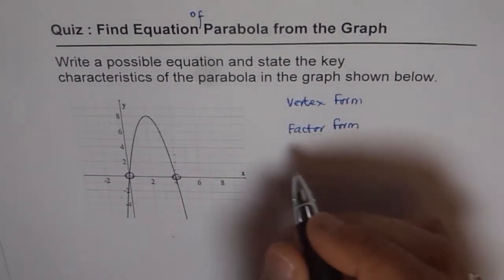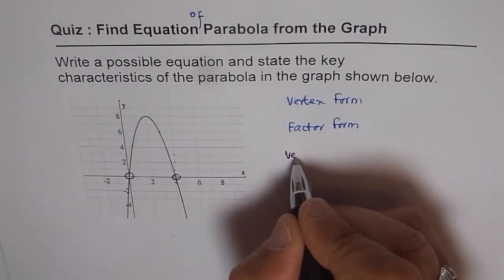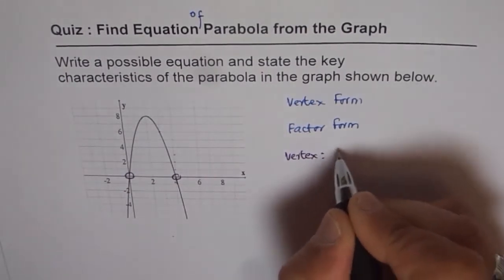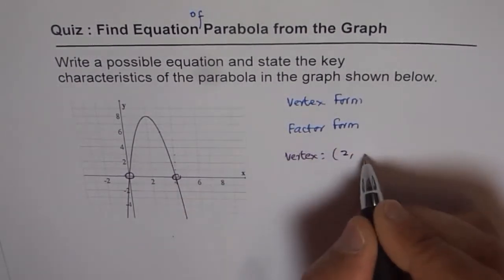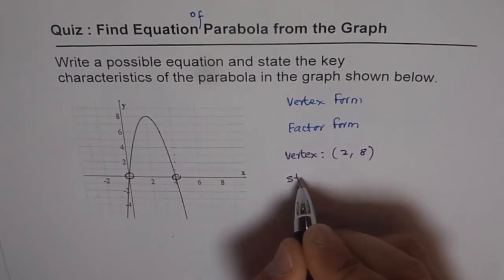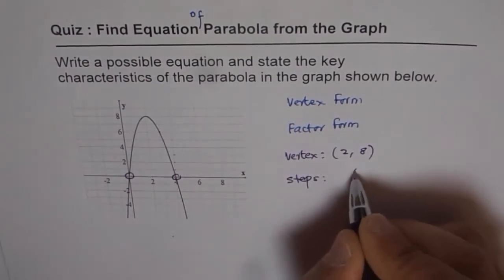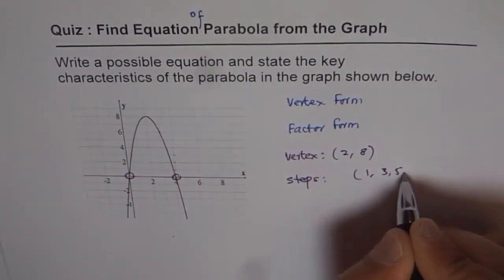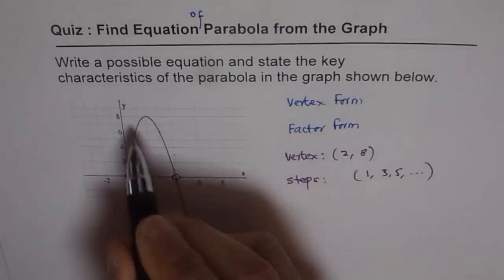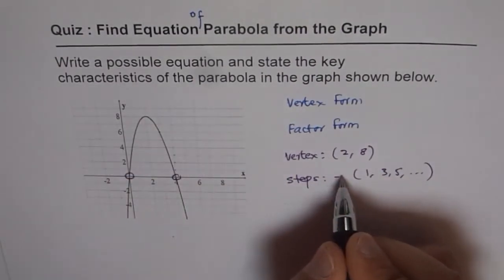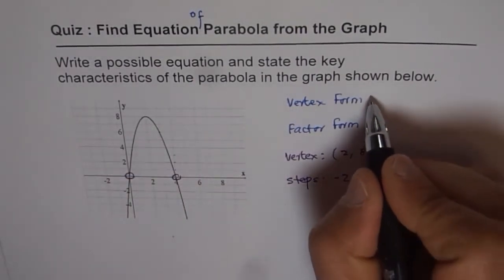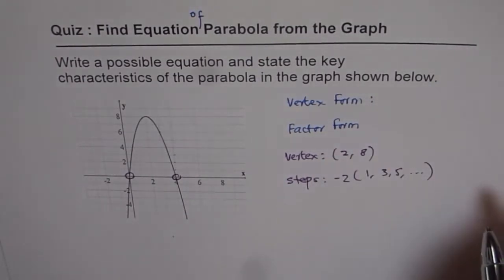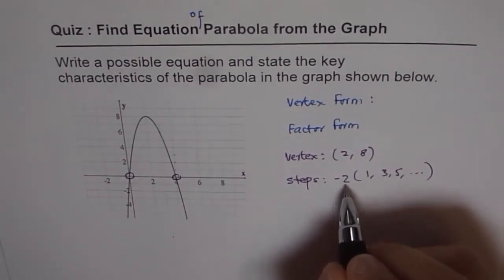From here, since we know the vertex is at (2, 8), the steps are actually not 1, 3, 5, 7, but multiplied by minus—you're going down. So it's minus 2. Therefore, we can write our equation straight from here. Minus 2 is the a value.